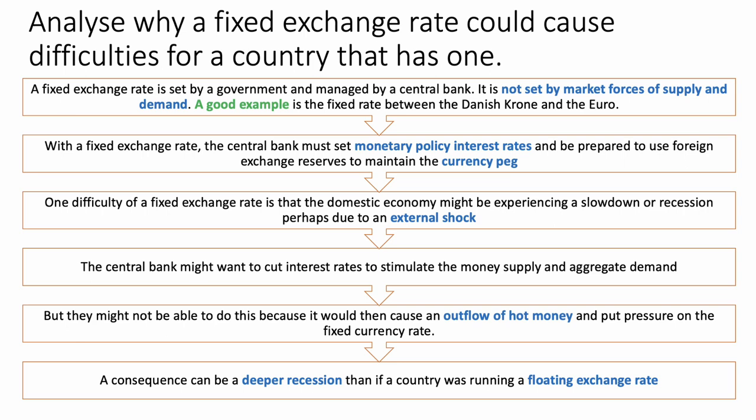Building the chain of reasoning: with a fixed exchange rate, the central bank — the Bank of Denmark — must set monetary policy, interest rates, and be prepared to use changes in foreign exchange reserves to maintain that fixed currency peg. One difficulty of a fixed exchange rate is that the domestic economy might be experiencing an economic slowdown or even a recession, perhaps as a result of an external shock. The central bank might want in that situation to cut interest rates to stimulate the money supply and components of aggregate demand. But they might not be able to do this because it would then cause an outflow of hot money and put downward pressure on the fixed currency rate — so that limits their room for manoeuvre.